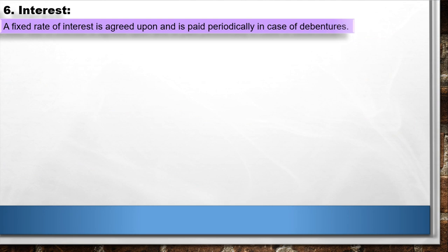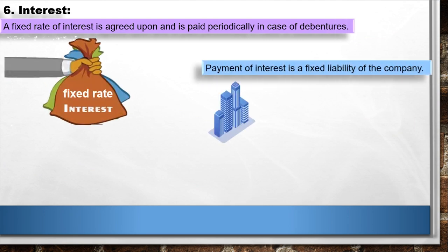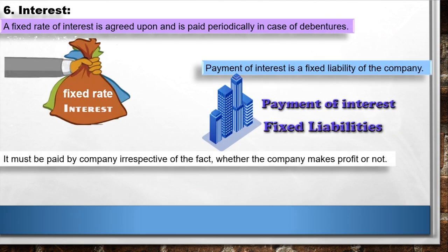6. Interest: A fixed rate of interest is agreed upon and paid periodically in case of debentures. Payment of interest is a fixed liability of the company — it must be paid irrespective of whether the company makes a profit or not. Debenture पर interest fixed rate पर दिया जाता है और company को profit हुआ हो या ना हुआ हो, interest का payment करना company के लिए बाध्यकारी होता है.